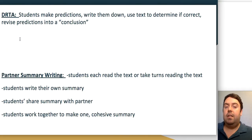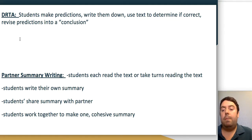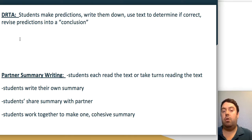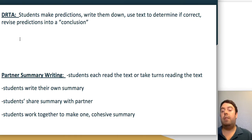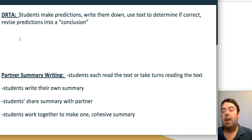Another engaging reading comprehension activity is DRTA. Before students even read the text, they make and write down predictions about what they'll read. Then they actually read the text to determine if their predictions were correct. Based on what they read, they revise their initial predictions into a conclusion reflecting what they actually found. Since students have a vested interest in seeing whether their predictions were correct, they're more likely to stay engaged.